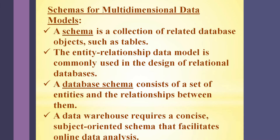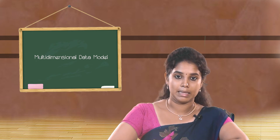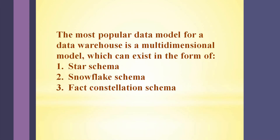Now let us discuss different types of schemas for multidimensional data models. Schema is a collection of related database objects — a typical example being a table. Schema can also be called the structure behind the organization of data; it is the logical description of the entire database. A database schema consists of a set of entities and the relationships between them. A multidimensional data model in a data warehouse can exist in the form of star schema, snowflake schema, or fact constellation schema.